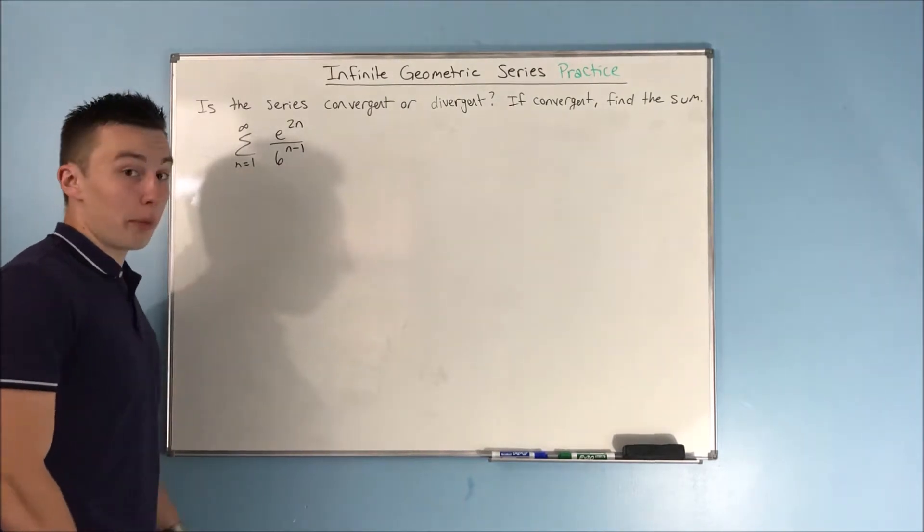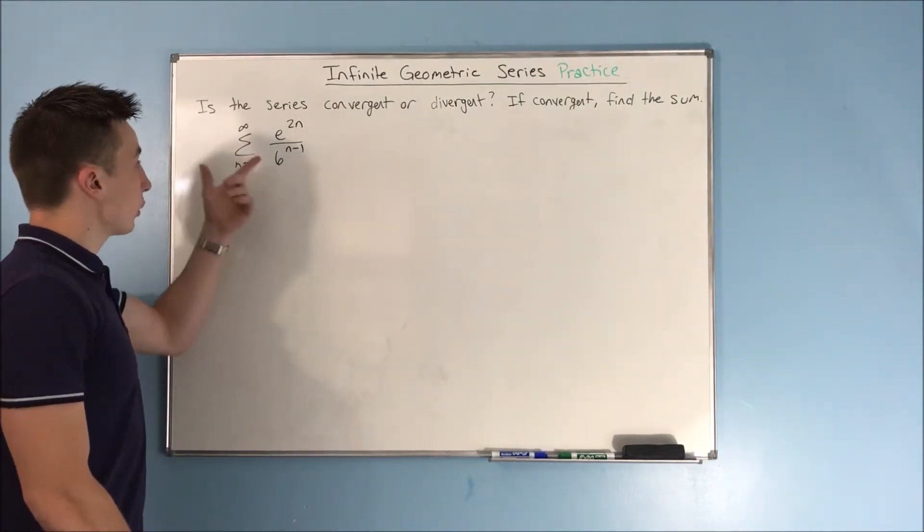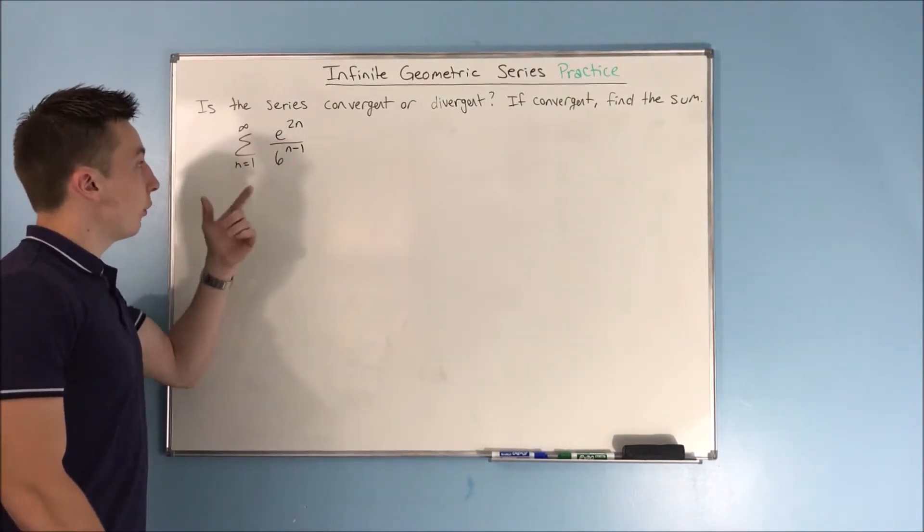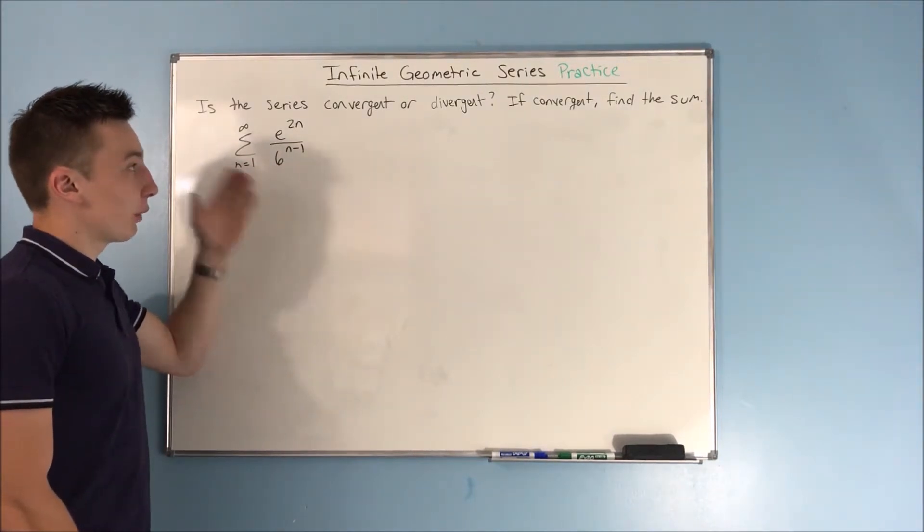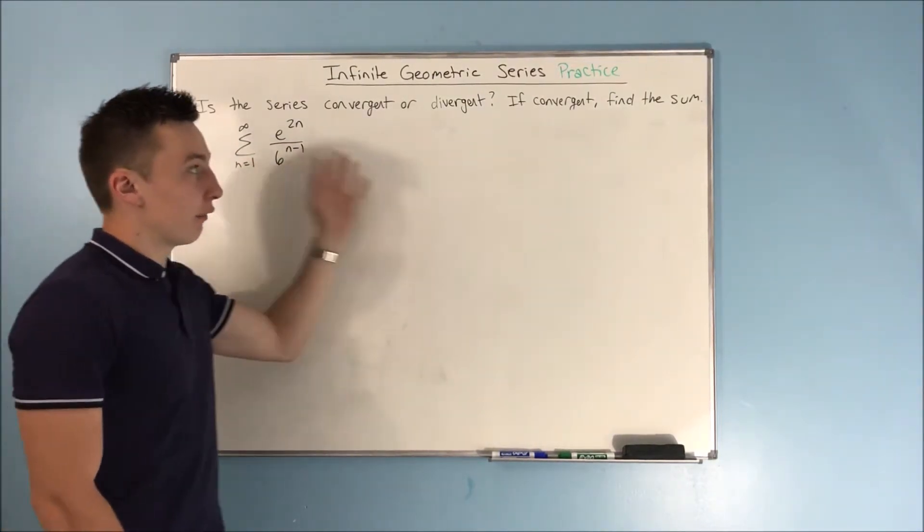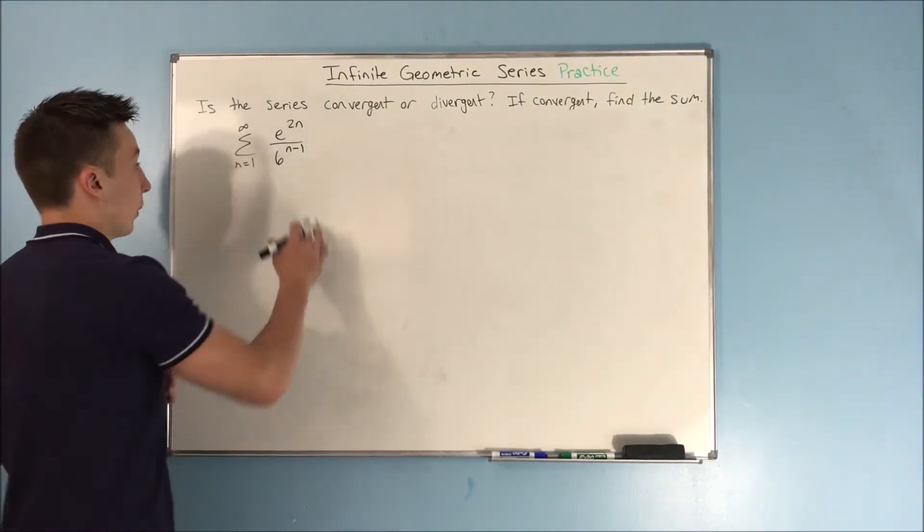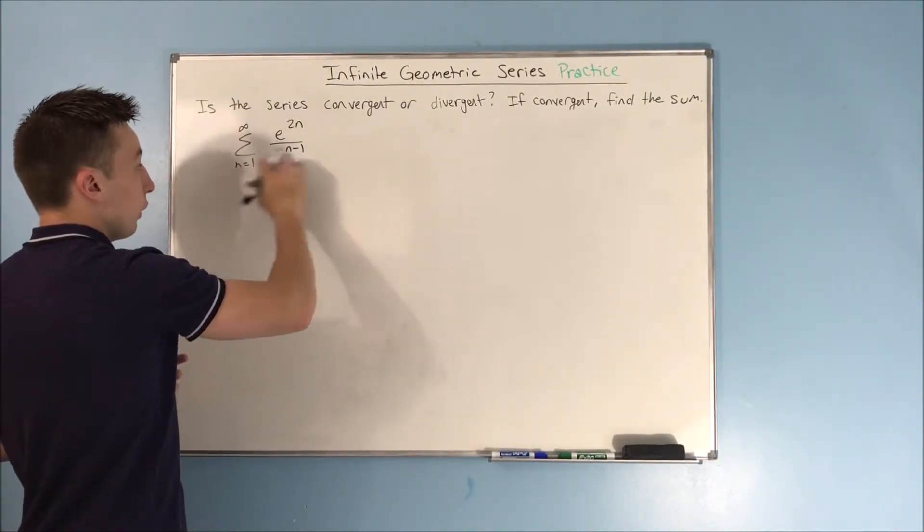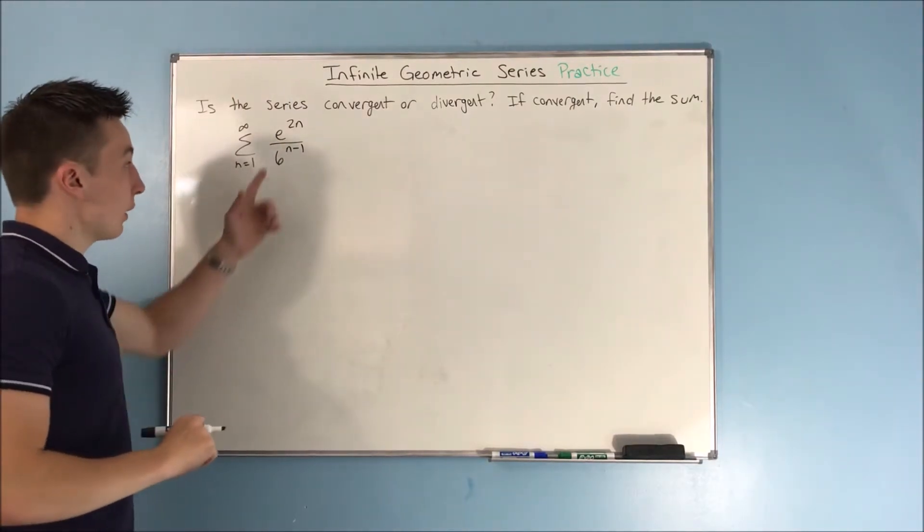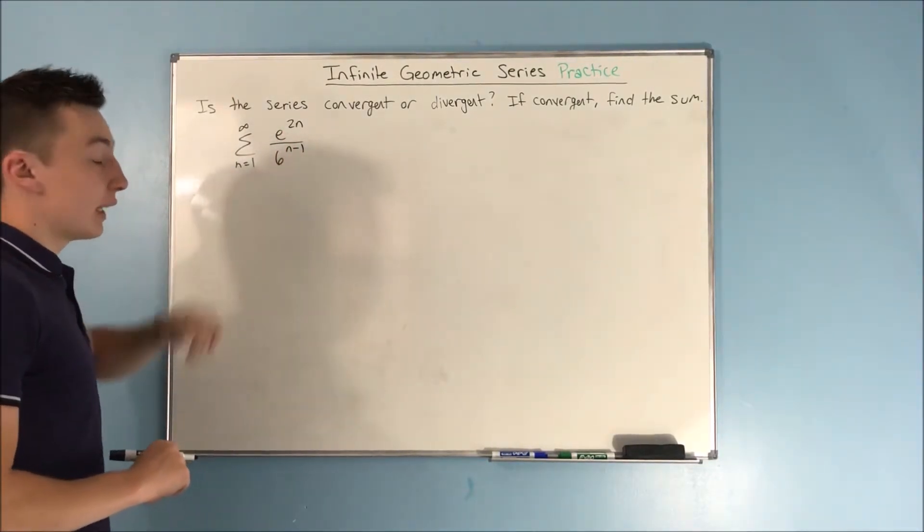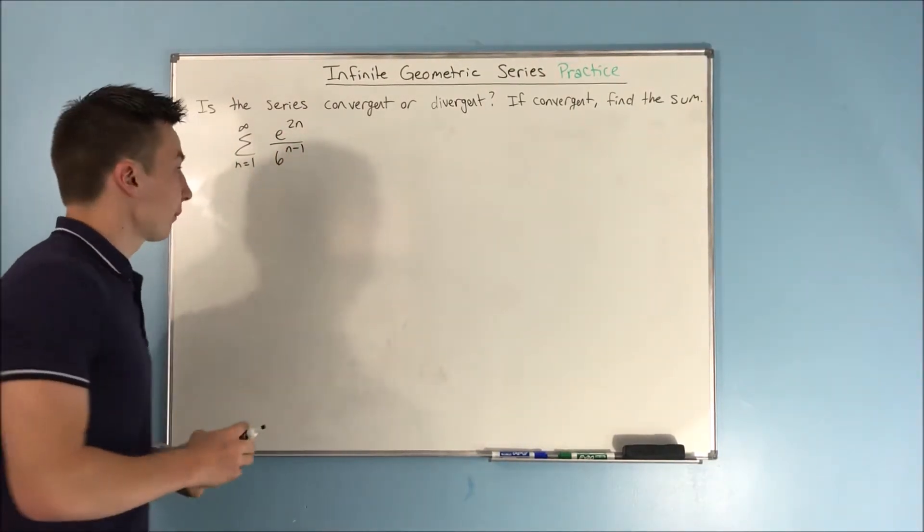Now, we have our last problem up on the board here. The sum from n equals 1 to infinity of e to the 2n over 6 to the n minus 1. We want to find if this series is convergent or divergent, and if it is convergent, we need to find this sum. So, we already have an n minus 1 on the bottom here, but we need to break apart this 2n to get an n minus 1 on the top.